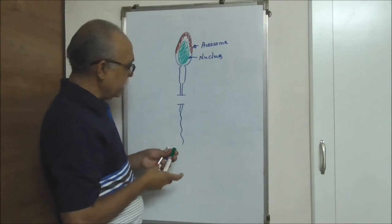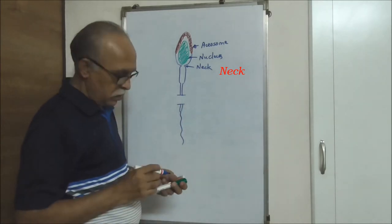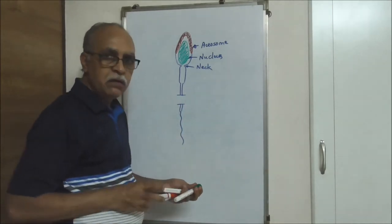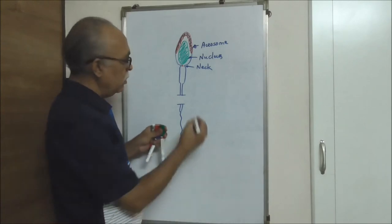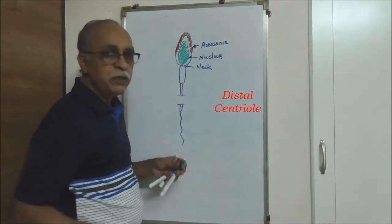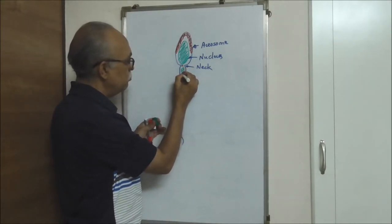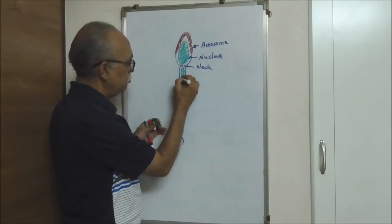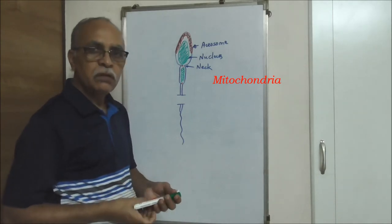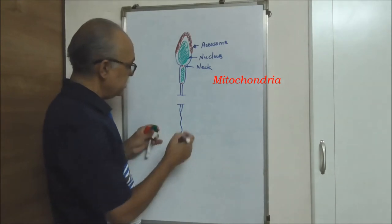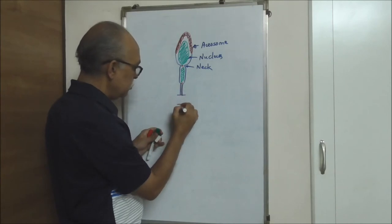This narrow part can be identified as the neck. Contained inside the neck is the proximal centriole, which continues to the end of the mid piece region. The mid piece also contains the mitochondria.